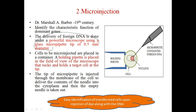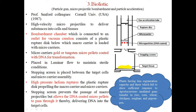In microinjection, a holding pipette is placed in the field of view of the microscope and it sucks and holds the target cell at the tip. The micropipette tip is injected through the membrane of the cell, delivering the content of the needle into the cytoplasm. One benefit of this method is that we can easily identify the transformed cell upon injection of a dye along with the DNA.